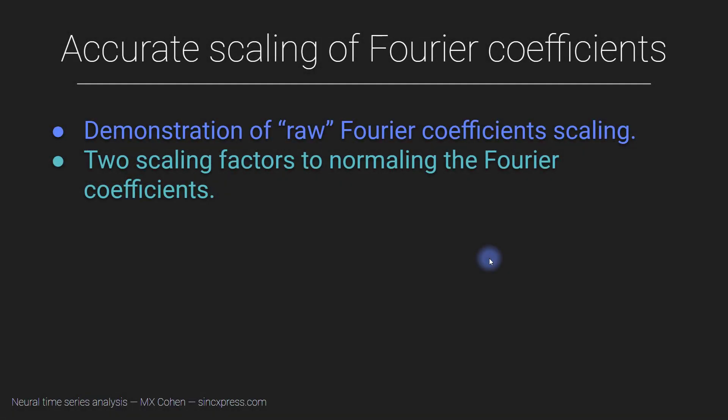I'm going to start this video by showing you that the raw Fourier coefficients, so the output of the FFT function, has units that are basically uninterpretable. And that will lead to a discussion of two scaling factors, two normalization factors, that you can apply to the Fourier coefficients in order to interpret or put the Fourier coefficients back into the units of the original data.